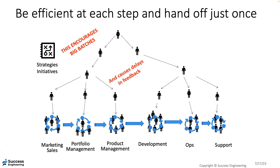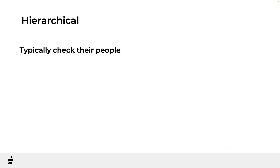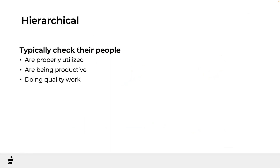Big batches cause delays in feedback — even if you hand off, you get feedback much later. This causes waste and too much work in process. WIP stands for work in process — 'process' is more accurate than 'progress' because it means work is in play but may not be moving forward. Hierarchically, managers check whether their people are properly utilized, productive, doing quality work, and working on the right things. But this focus is already an example of how the system affects how we manage and think.